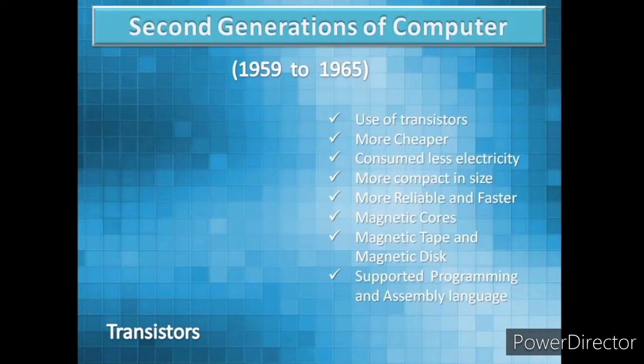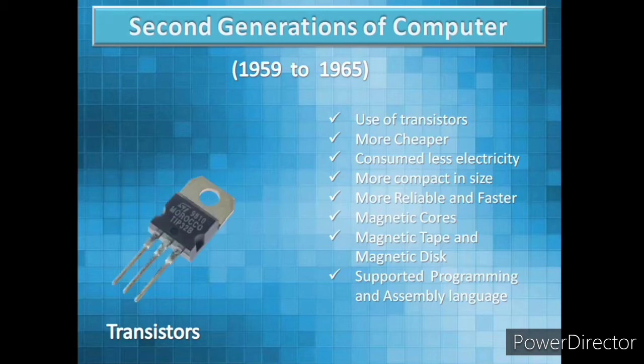The second generation of computers was between 1959 to 1965. In this generation, transistors were used. It was cheaper than the first generation of computers, and was also smaller in size, more reliable, and faster than first generation computers.